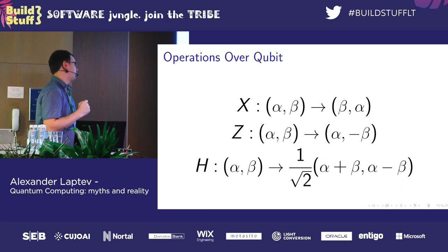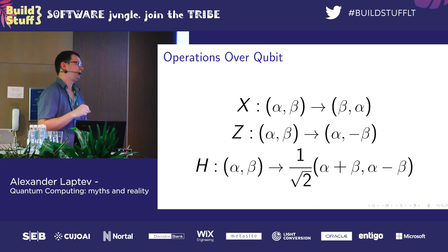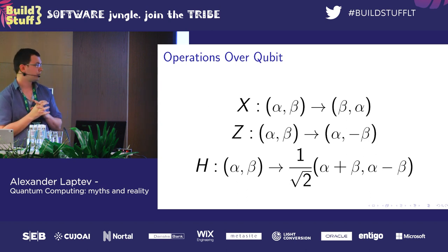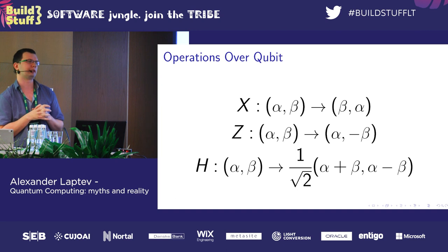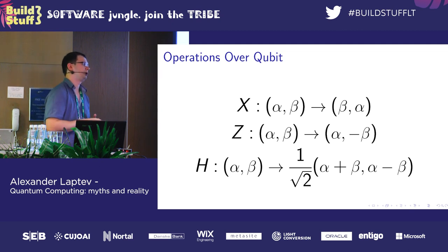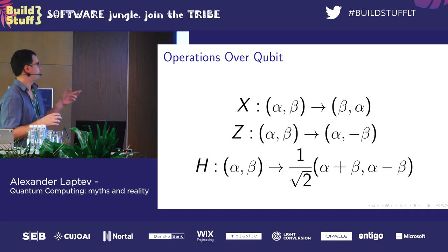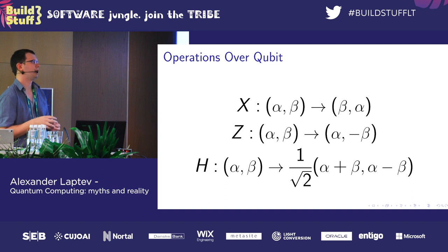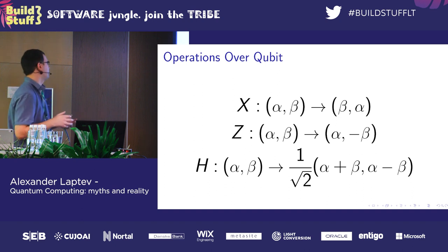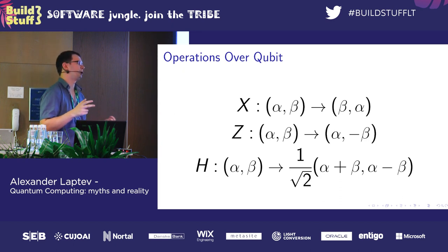The other important requirement for operations is reversibility — for every operation there is a reverse one which returns the qubit to its original state. This is important because we cannot define standard classical operations for qubits. In classical computers we can write something like 'array[0] = 0' and it works, but for a qubit it won't. If we imagine an operation that sets a qubit to 0, we'd need a reverse of it — and we wouldn't know what state to return to: 1, 50/50, 25/75? We don't know.